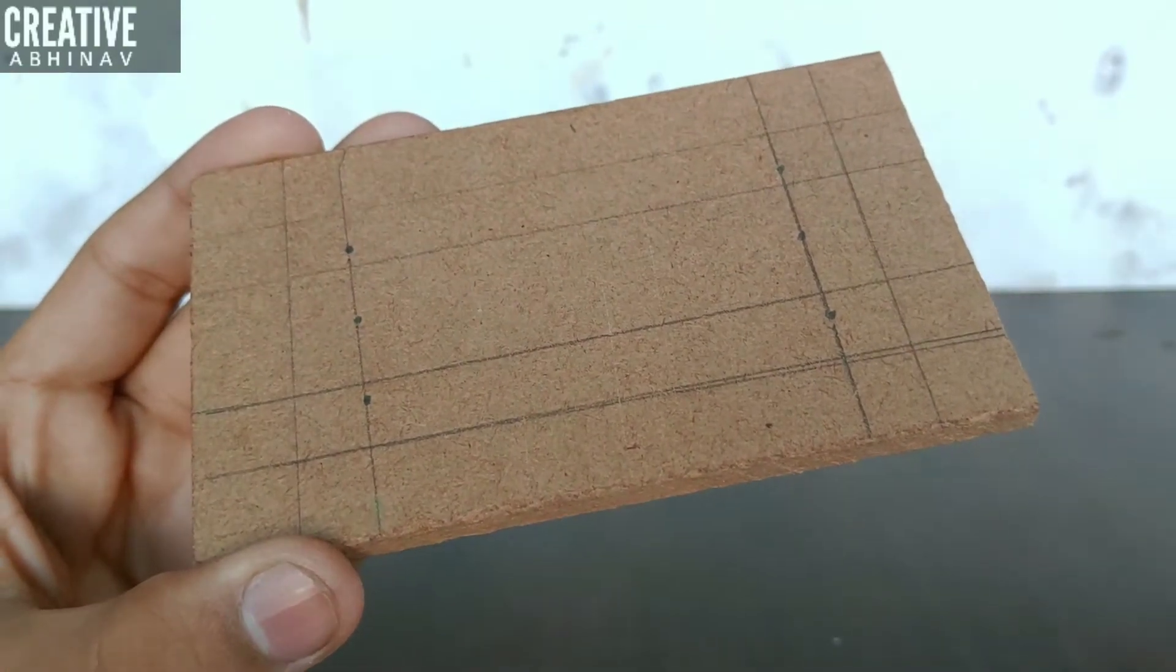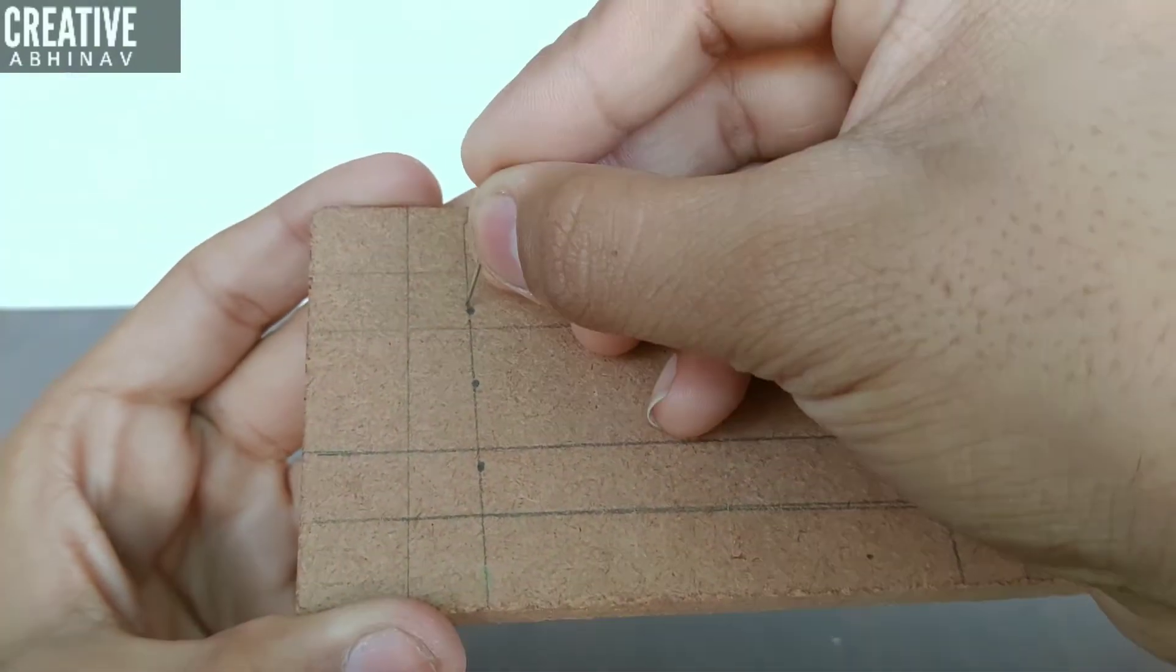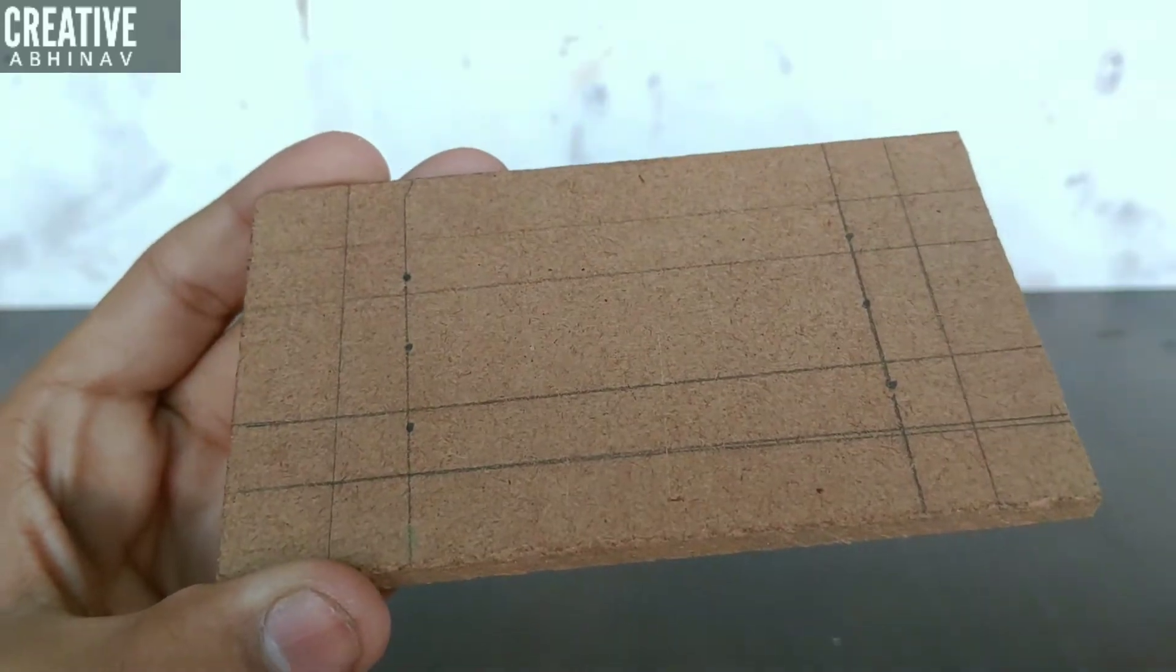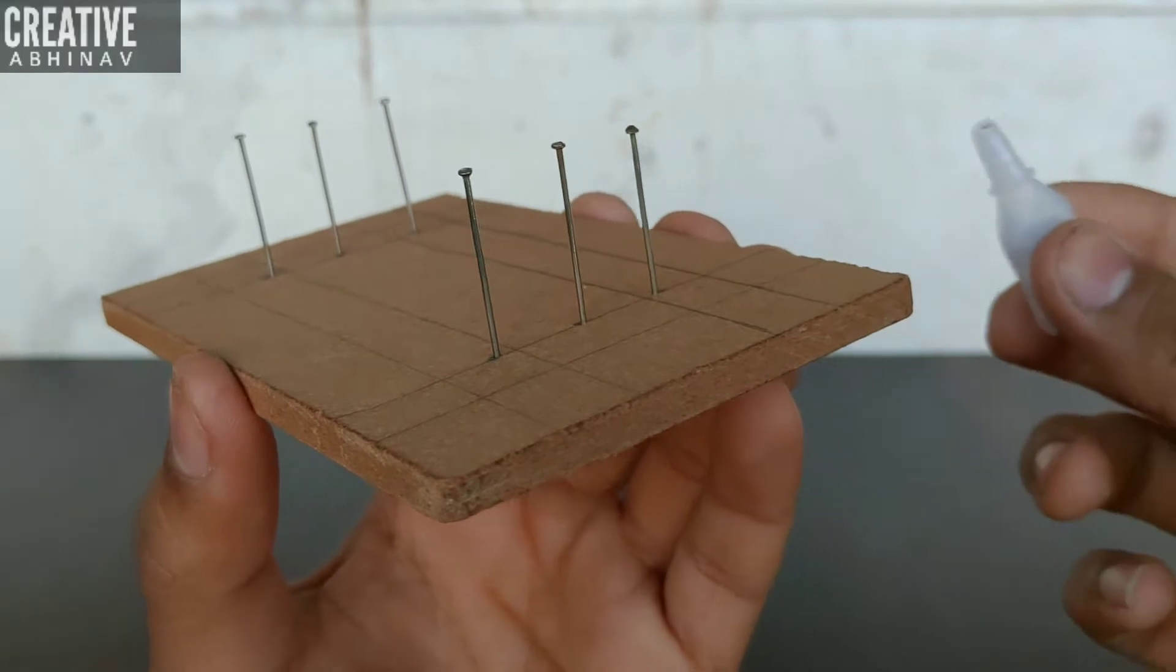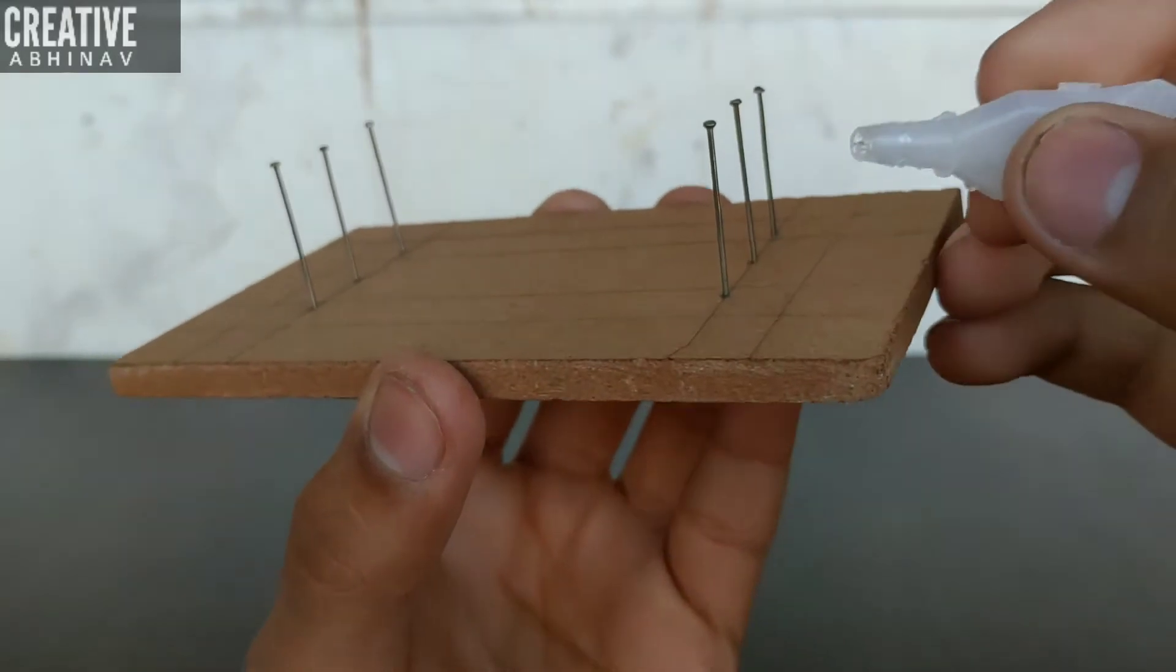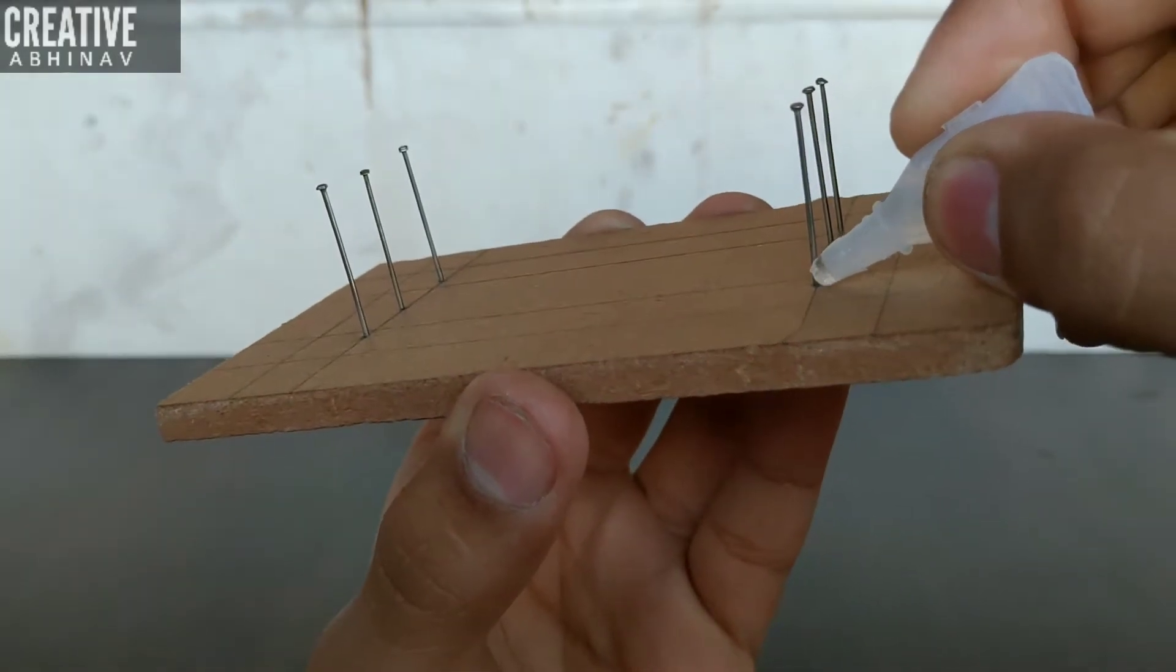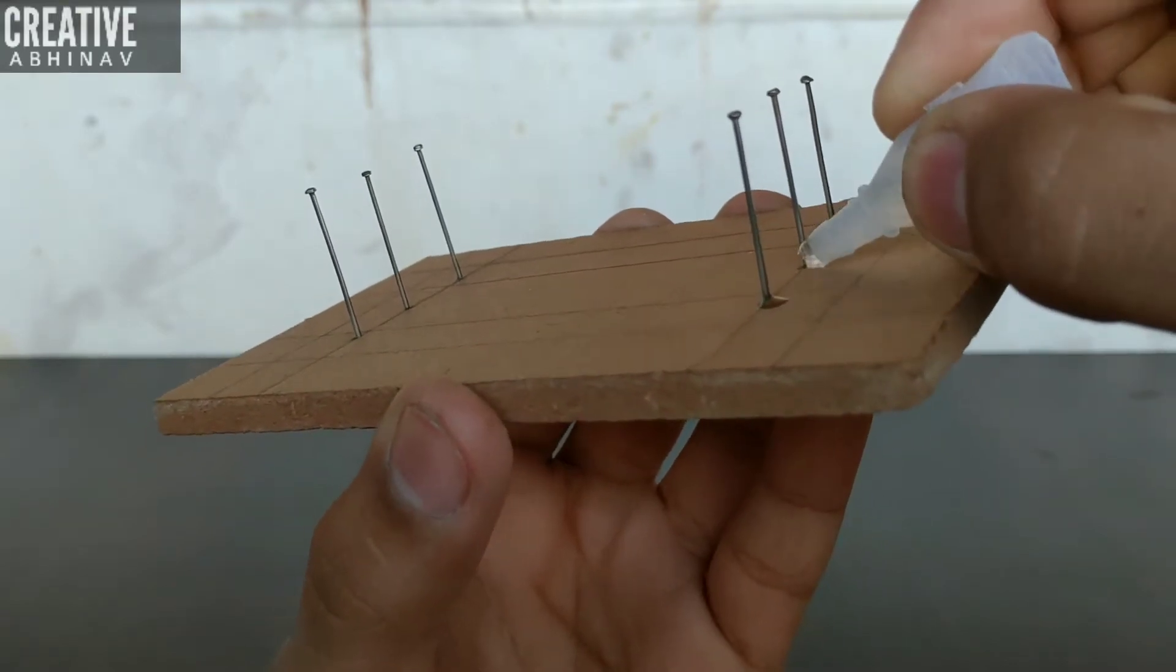Now guys, take a wooden piece then we have to hammer some metal pins on the marked points like this. Now let's put some droplets of glue at the end of metal pins. It will make it more stronger.